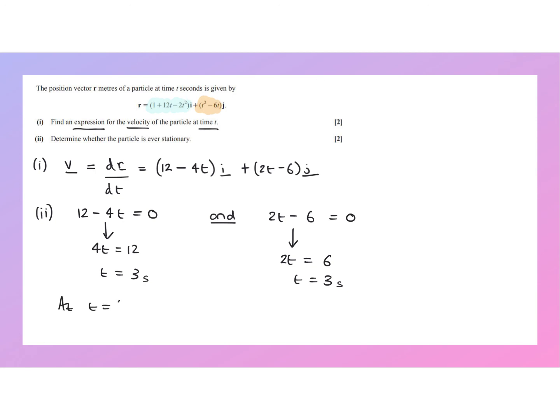So we can say at t equals 3 seconds, the velocity vector is equal to 0, and the particle is stationary.